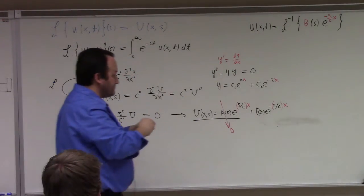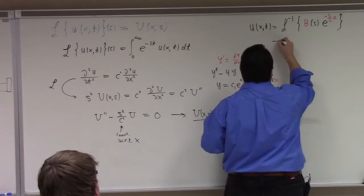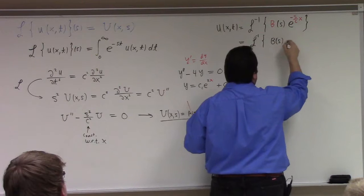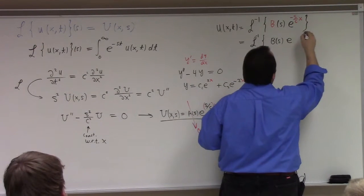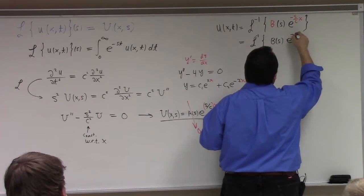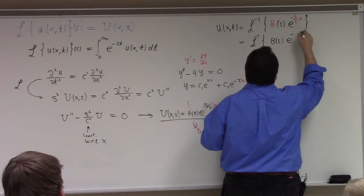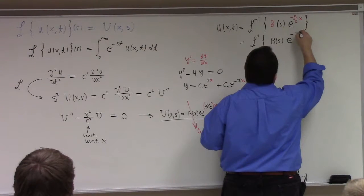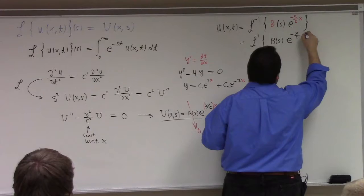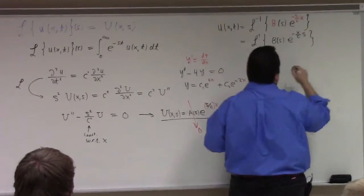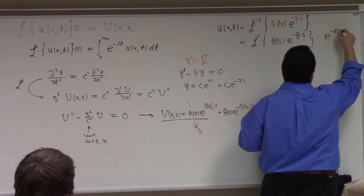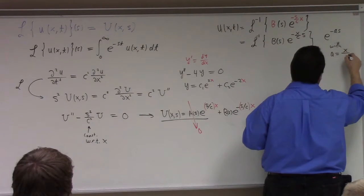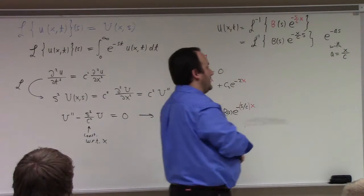Let me rewrite this in a slightly more inviting way. This is e to the minus x over C times S — like e to the minus A S, with A equal to x over C. This is one of those things we should know how to take the inverse Laplace transform of.